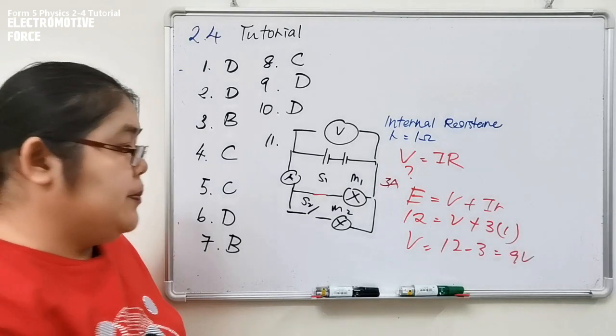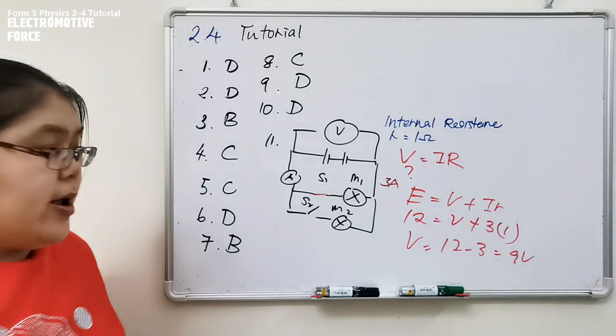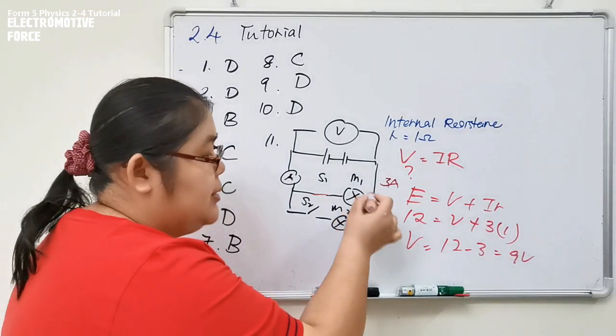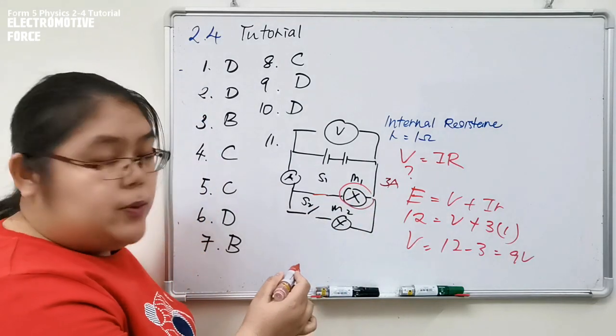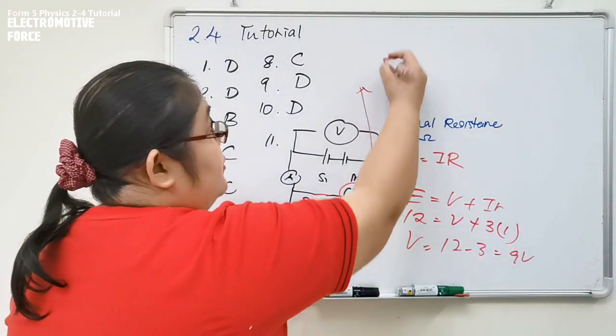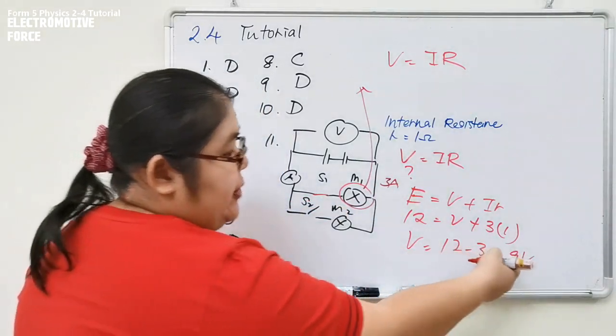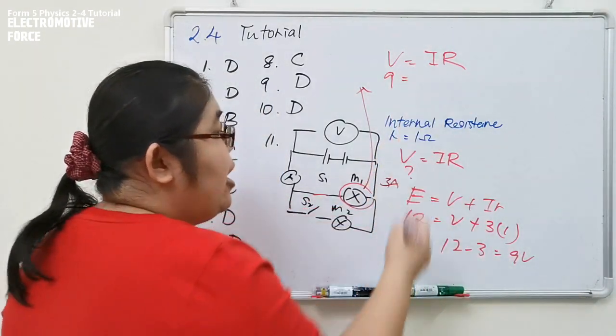Then the second question they ask about resistance for M1. They want to find R. If they want to find R, we just apply V equals IR to solve this problem. V is 9 volt.